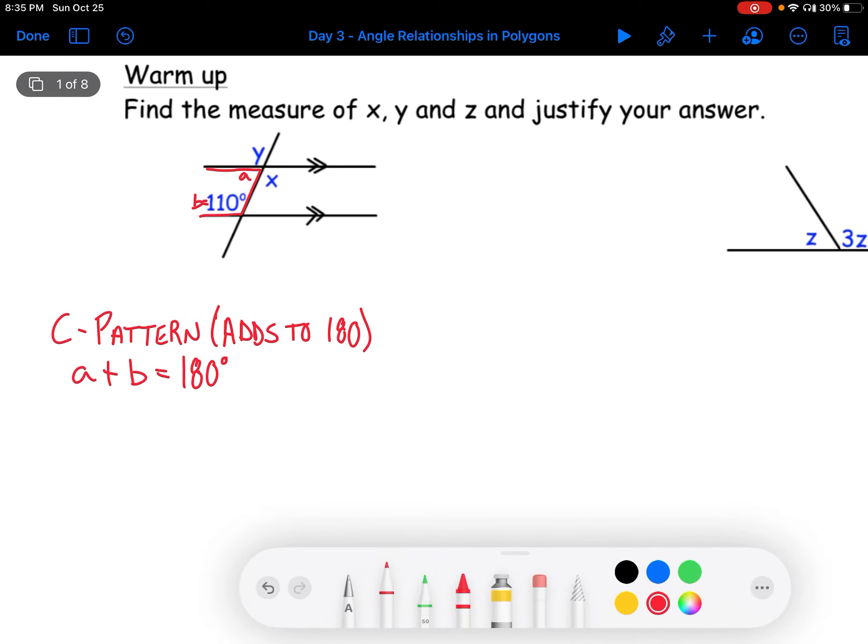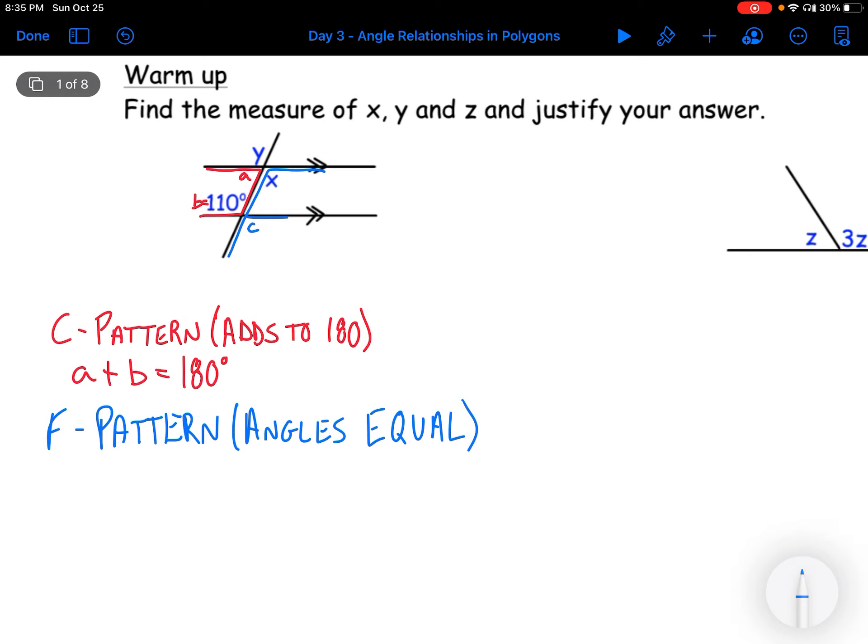The second pattern we're going to look at is the F-pattern. So the F-pattern goes like this, and like this. If we get x, we could call this down here c. So we would then be able to say the F-pattern, the angles are equal, so angle c equals x.